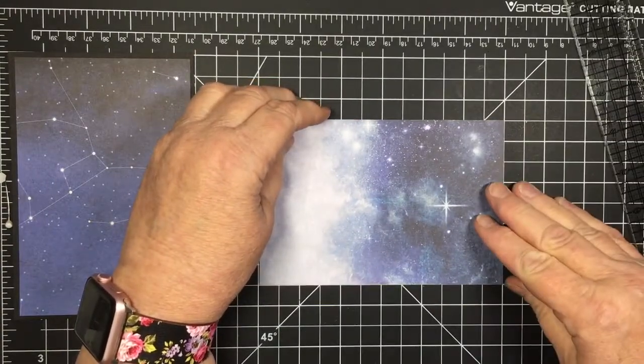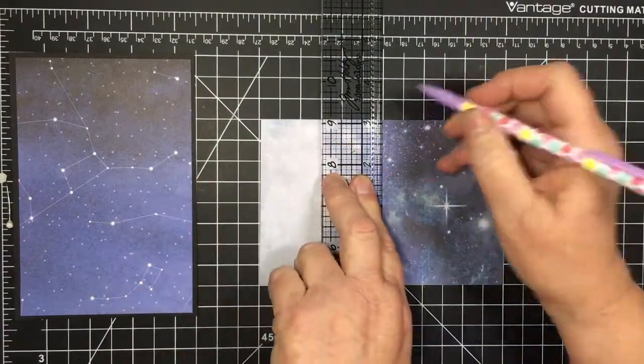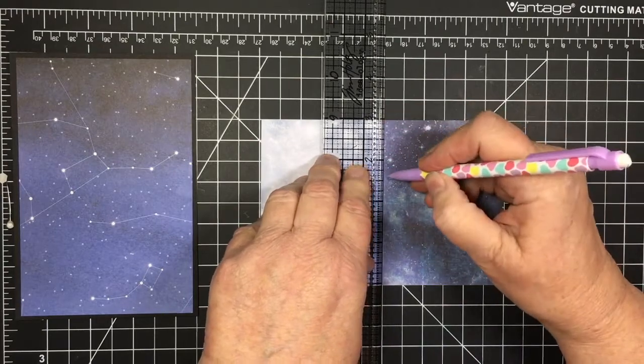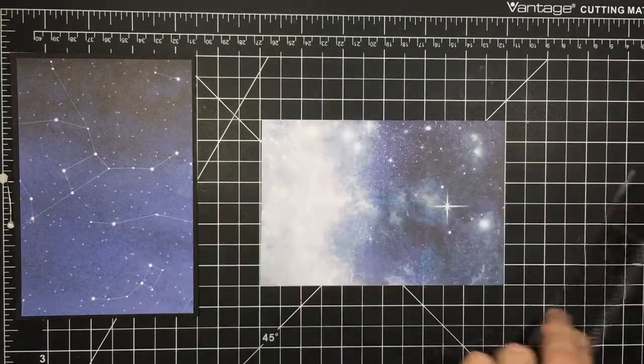And so what I'm doing now is I'm finding the center of the long side, and I'm taking my pencil and I'm marking a line. And then from each end, I'm marking an 1/2. And those will be our cut lines.